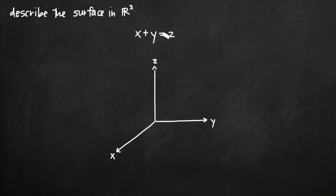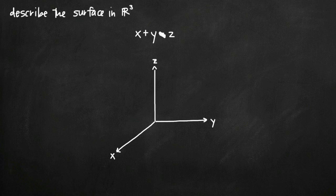What that tells us right away is that this equation represents a region that will never intersect the z-axis. When there's no z-variable involved, we can't intersect the z-axis. Similarly, if we had x plus z equals 2 and there was no y-variable involved, we would know we were dealing with a region that would never intersect the y-axis. That's one quick tip: recognize which variables are involved and therefore which coordinate axes the region will intersect.